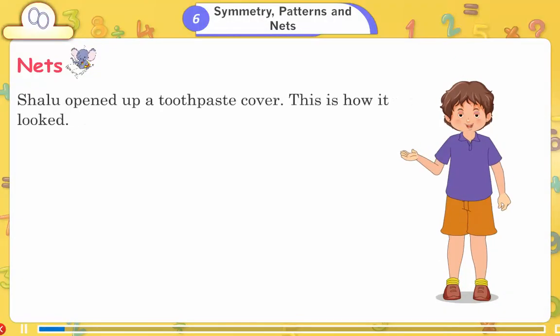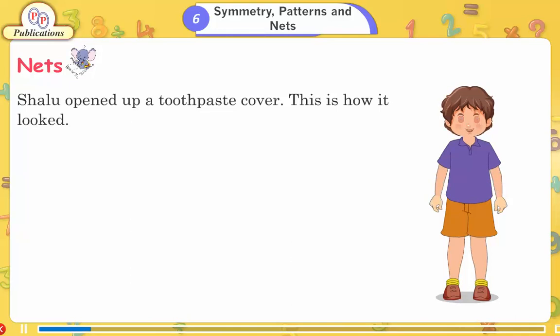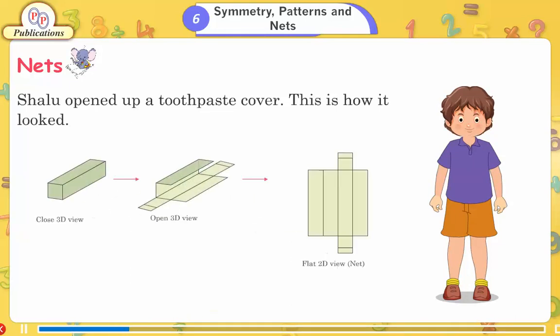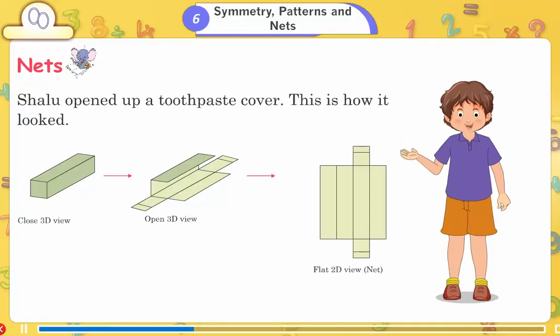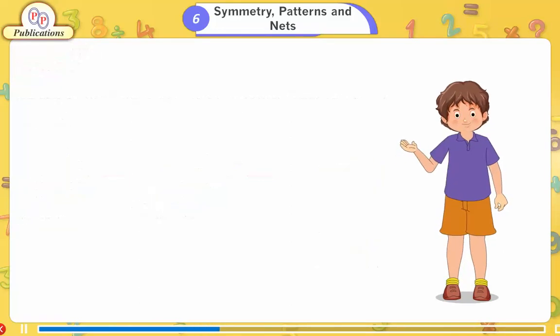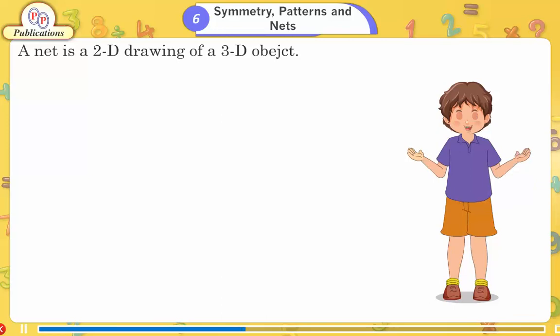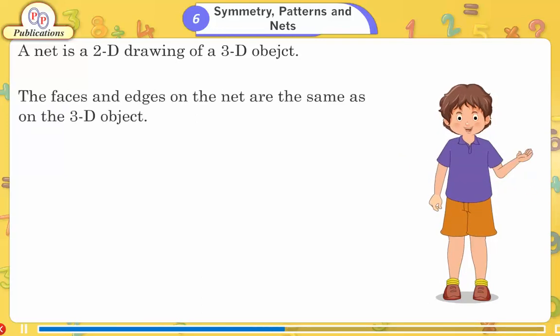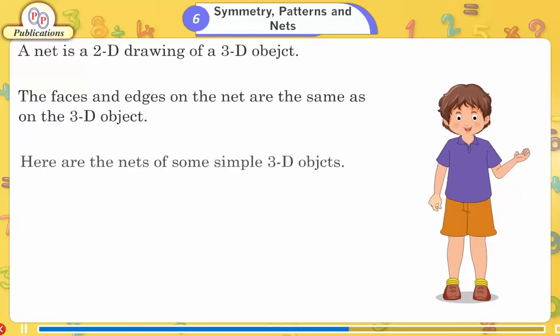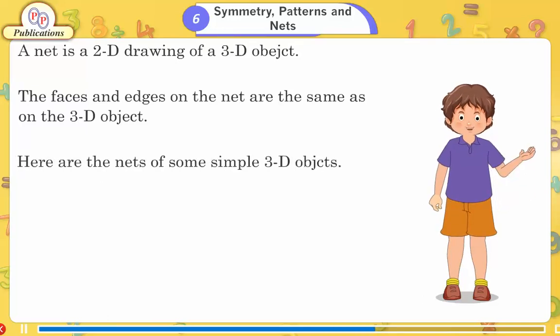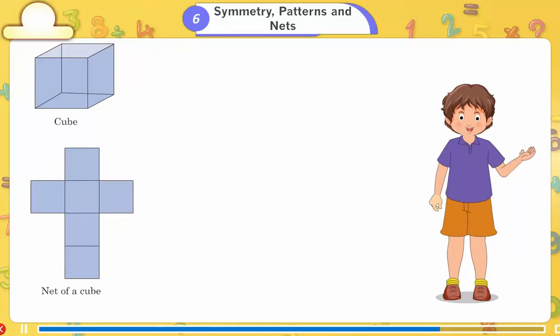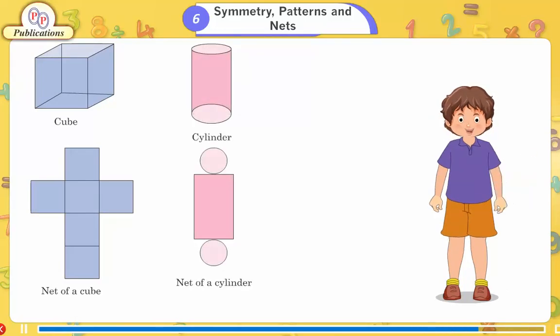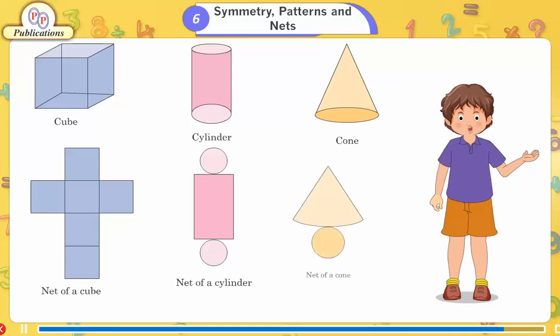Nets. Shalu opened up a toothpaste cover. This is how it looked. Close 3D view. Open 3D view. Flat 2D view. Net. A net is a 2D drawing of a 3D object. The faces and edges on the net are the same as on the 3D object. Here are the nets of some simple 3D objects: Cube, net of a cube. Cylinder, net of a cylinder. Cone, net of a cone.